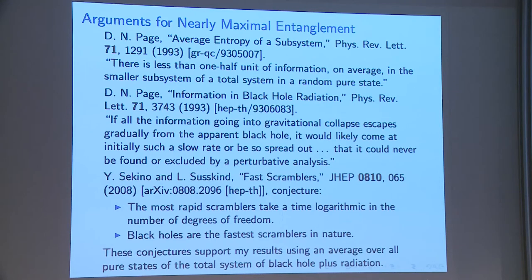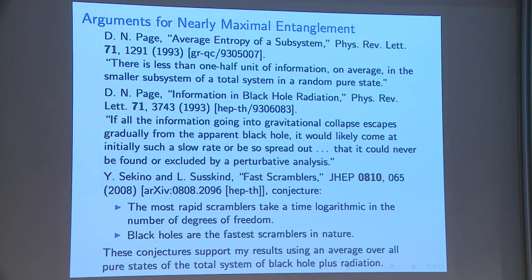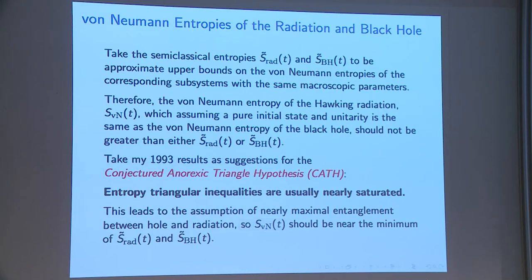Sekino and Susskind conjectured that black holes are fast scramblers — they scramble information in a time logarithmic in the number of degrees of freedom — and that black holes are the fastest scramblers in nature. They rapidly give a state where almost all subsystems have average entropy very nearly the same as the Haar average. This supports using an average over all pure states for the total system of black hole plus radiation.